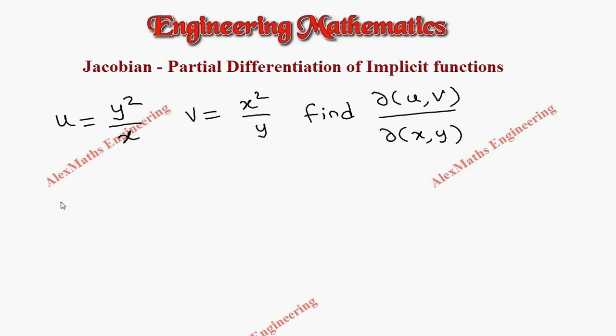Let's find ∂u/∂x, the partial differentiation of u with respect to x. y² is constant and the differentiation of 1/x is -1/x², so totally this is -y²/x².